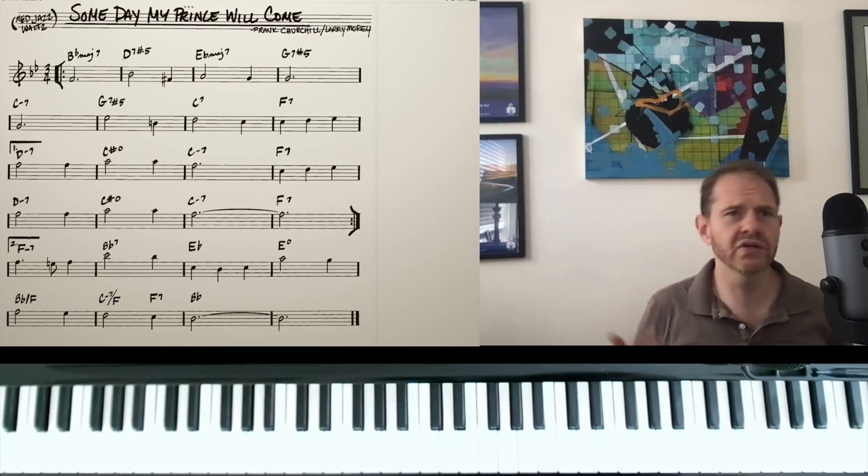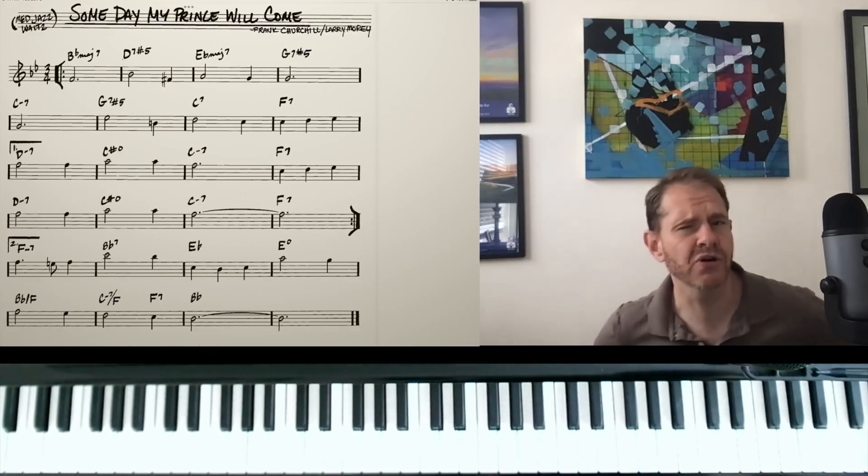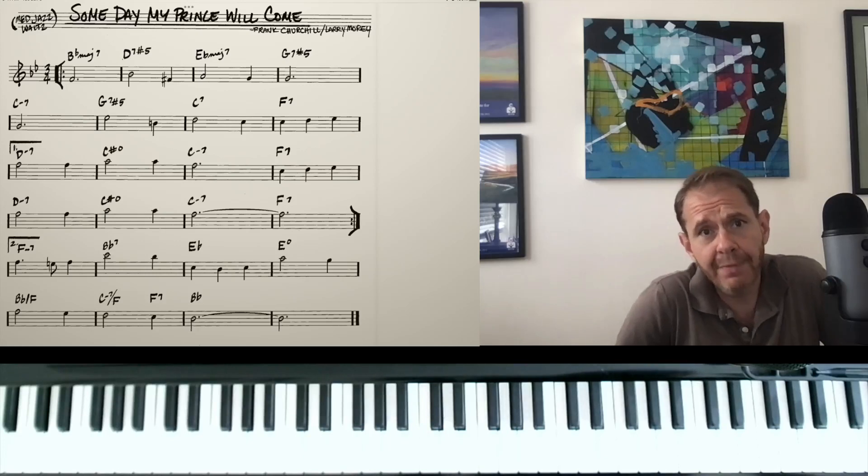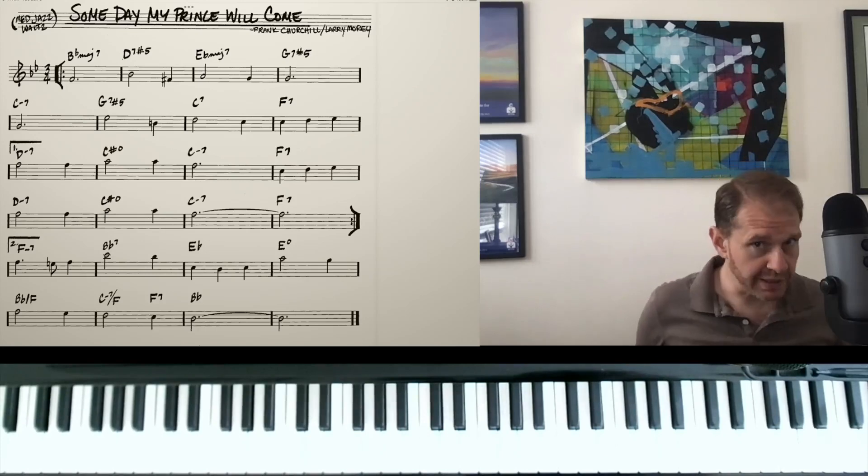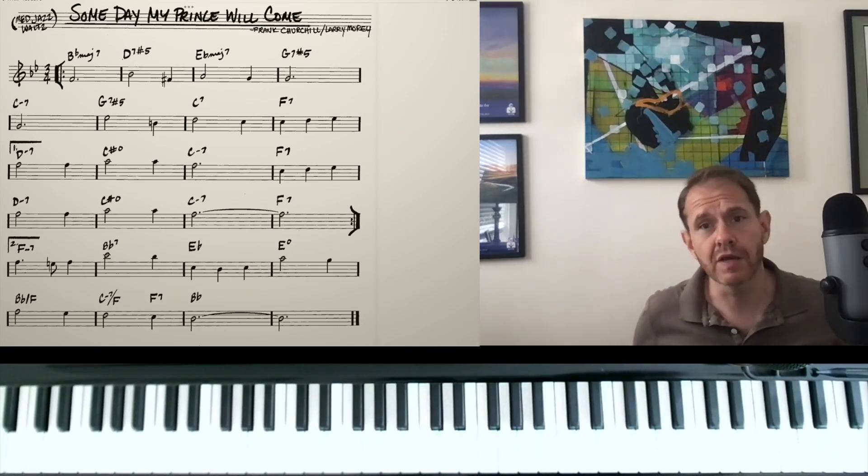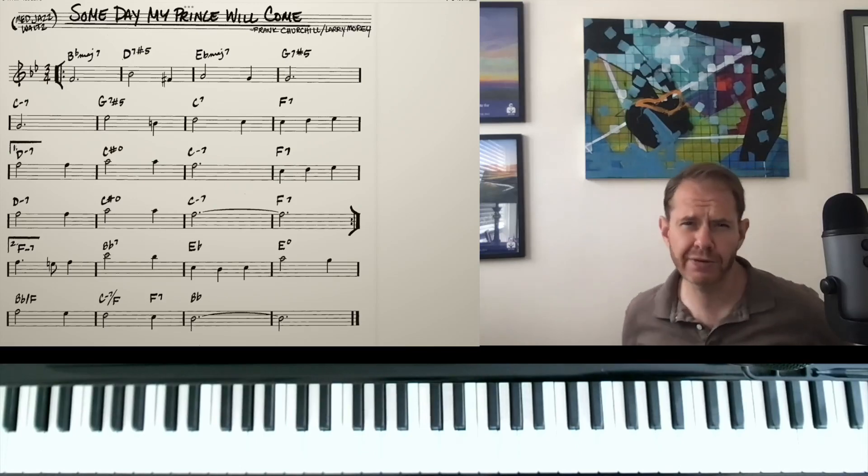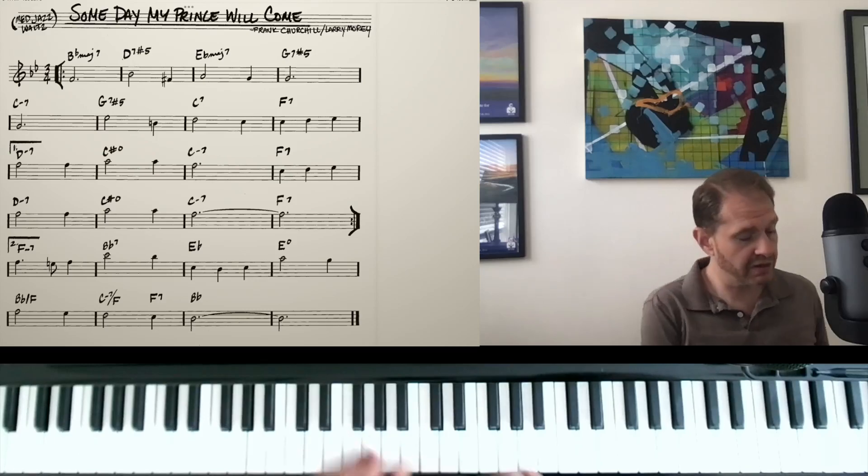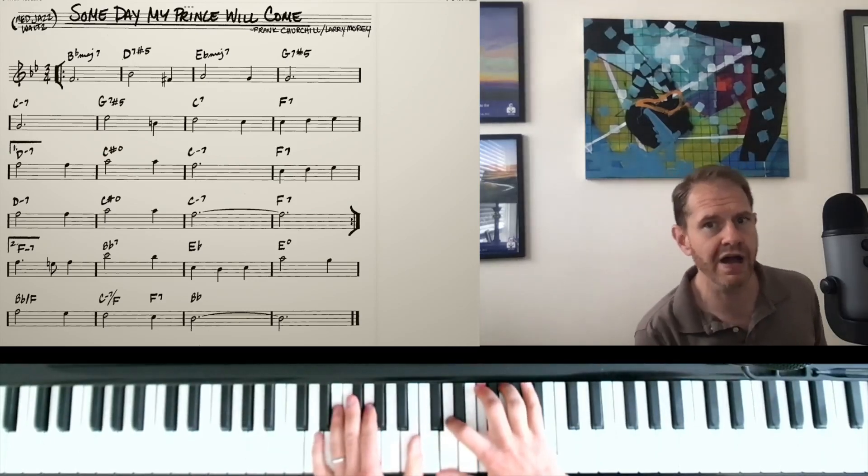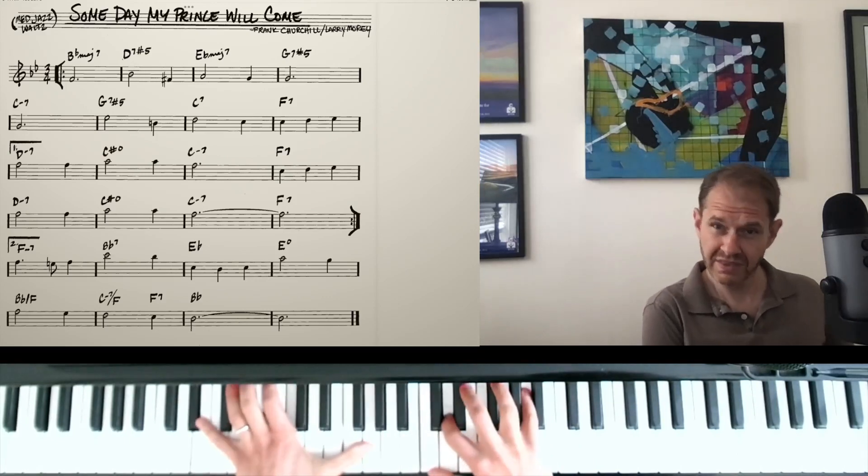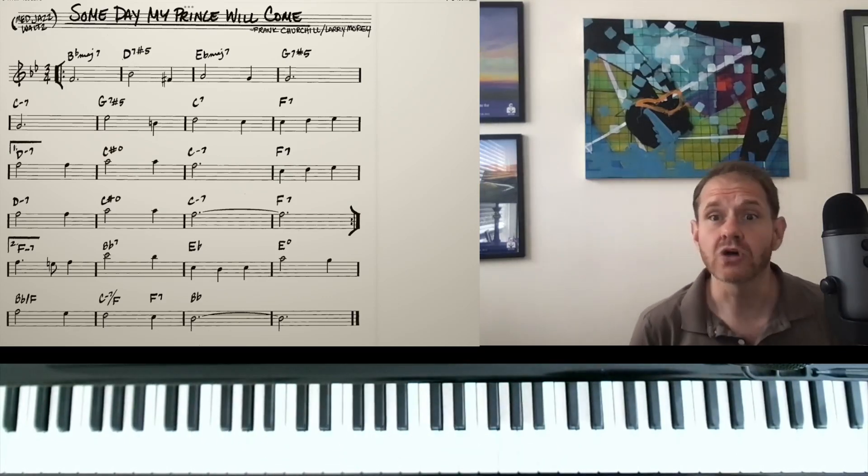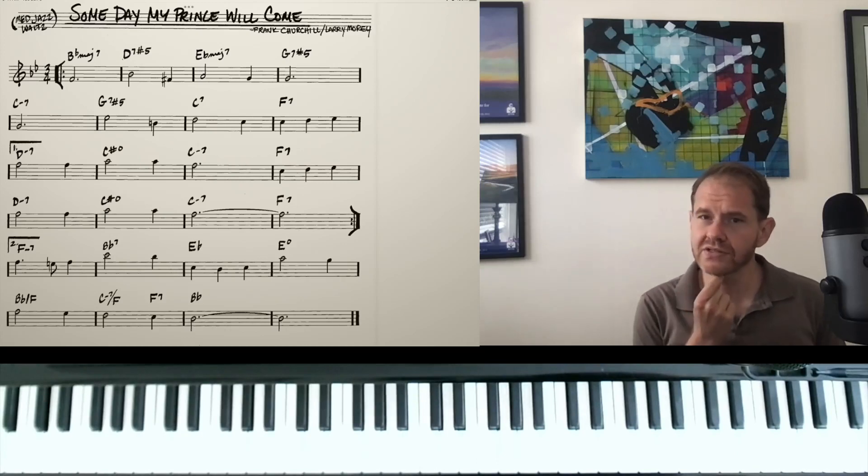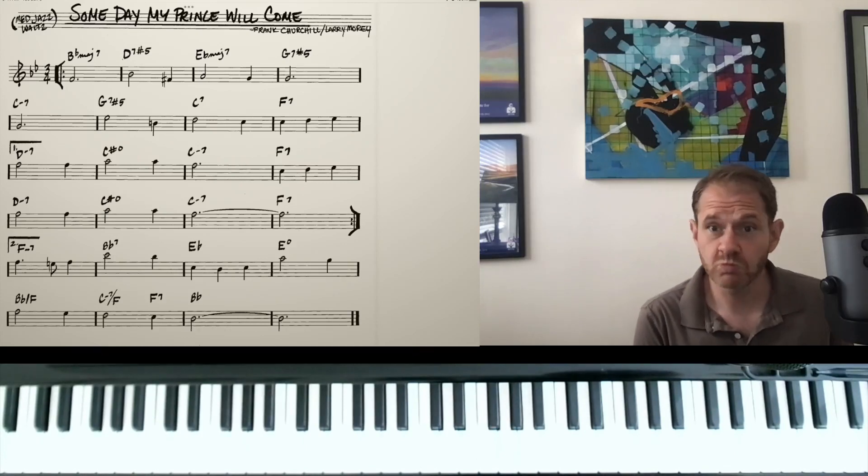So the first question is, how do you start? How do you even brainstorm what kind of an arrangement you want? And my first suggestion is to get to know the tune. And so that can be the melody and the chords. Is it very diatonic? Is it chromatic? Is there kind of a particular sound within the tune that's interesting? Here, one thing that I might latch on to is these dominant 7th sharp 5 chords. There's something kind of classical and regal about that.